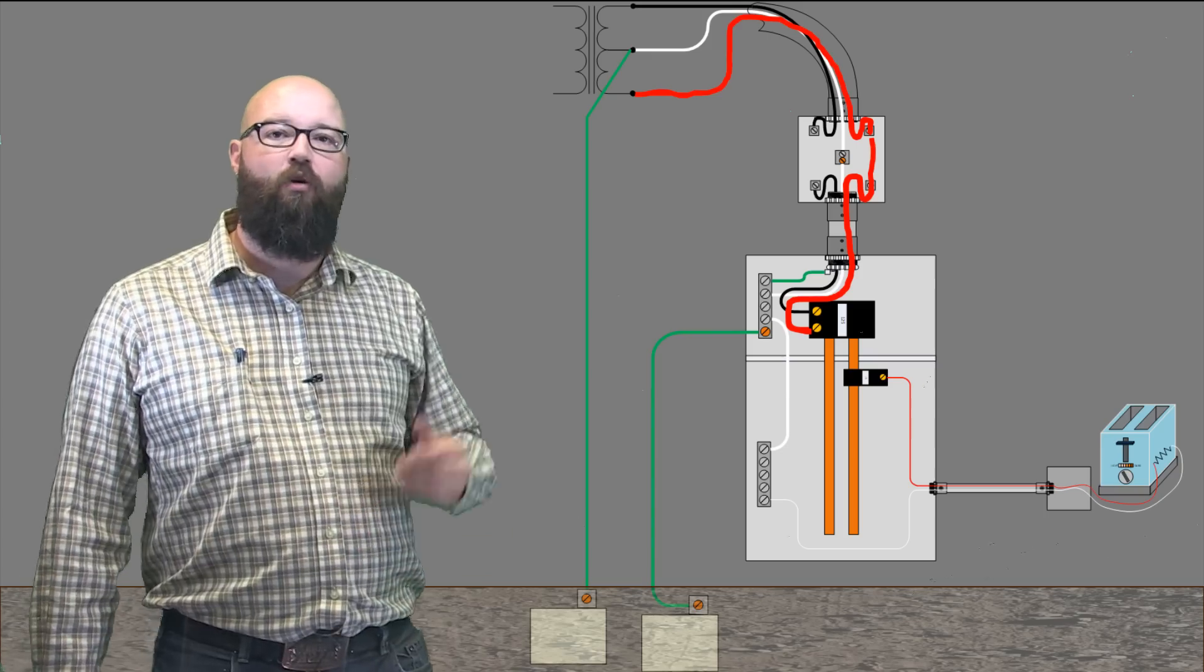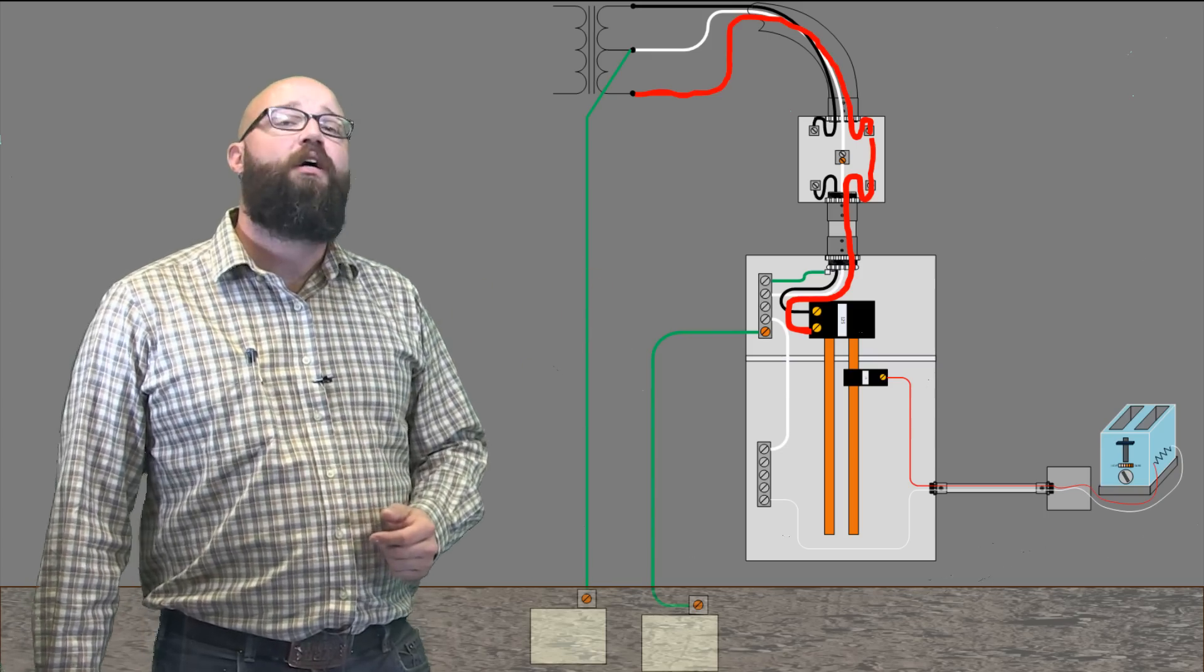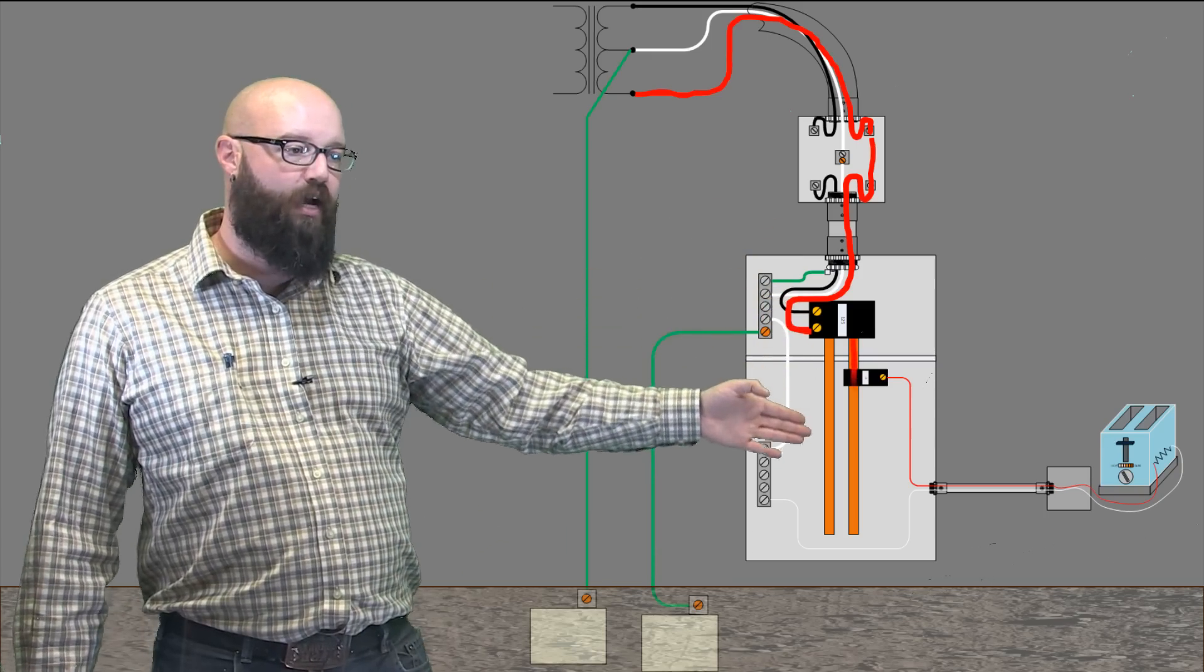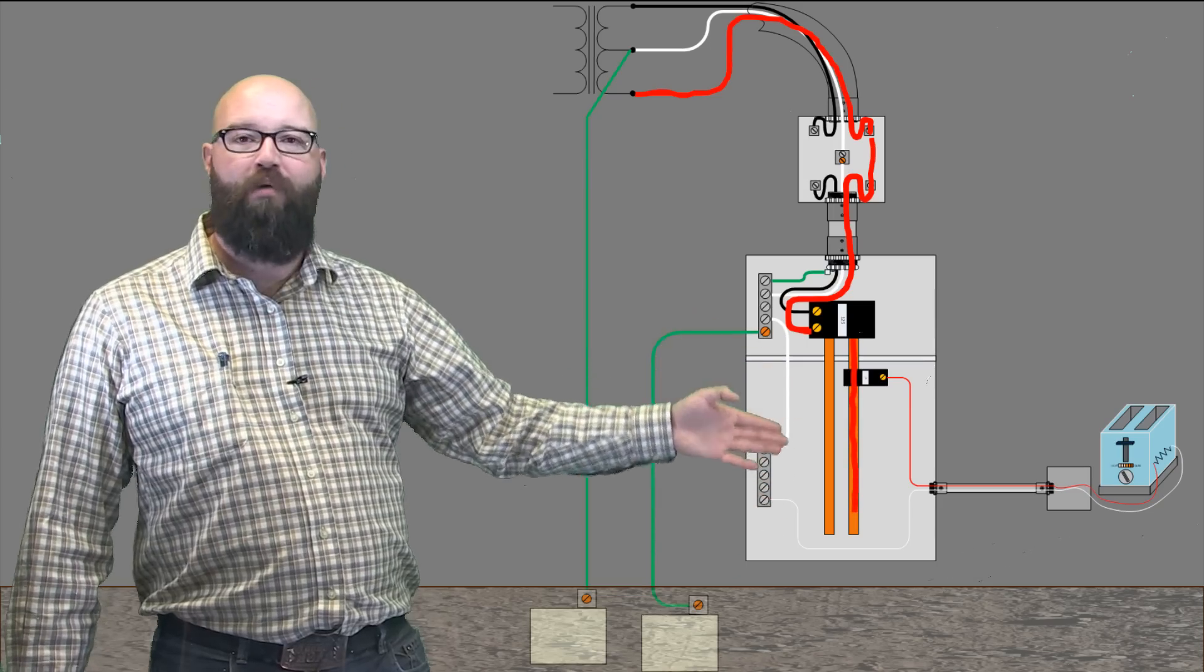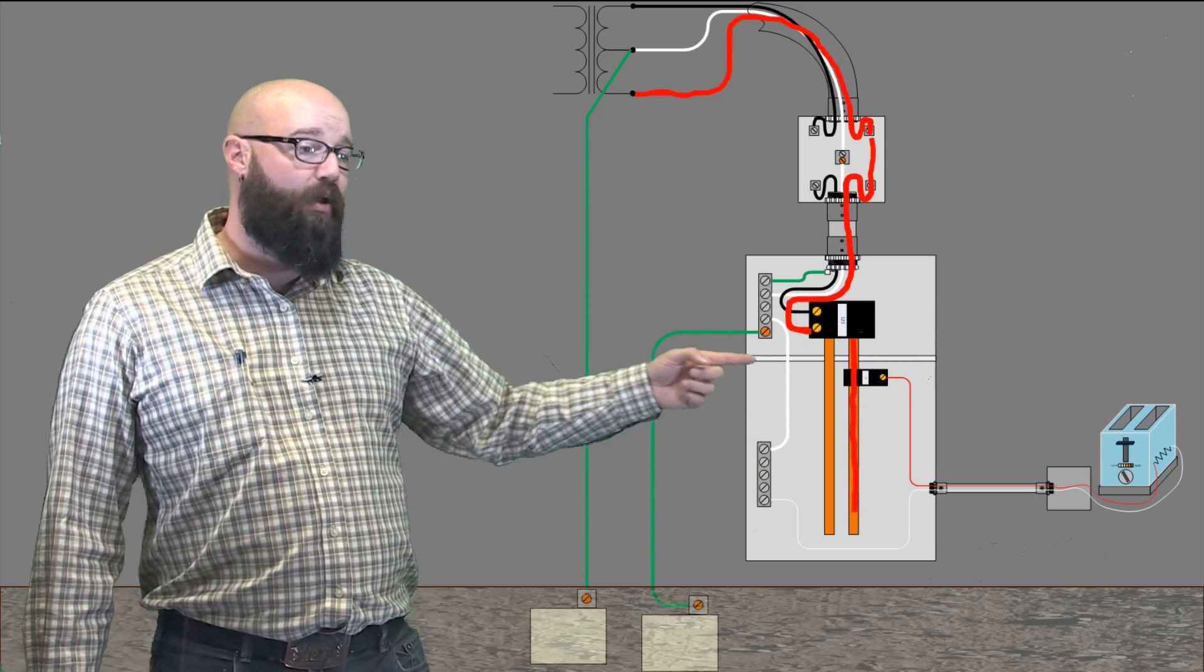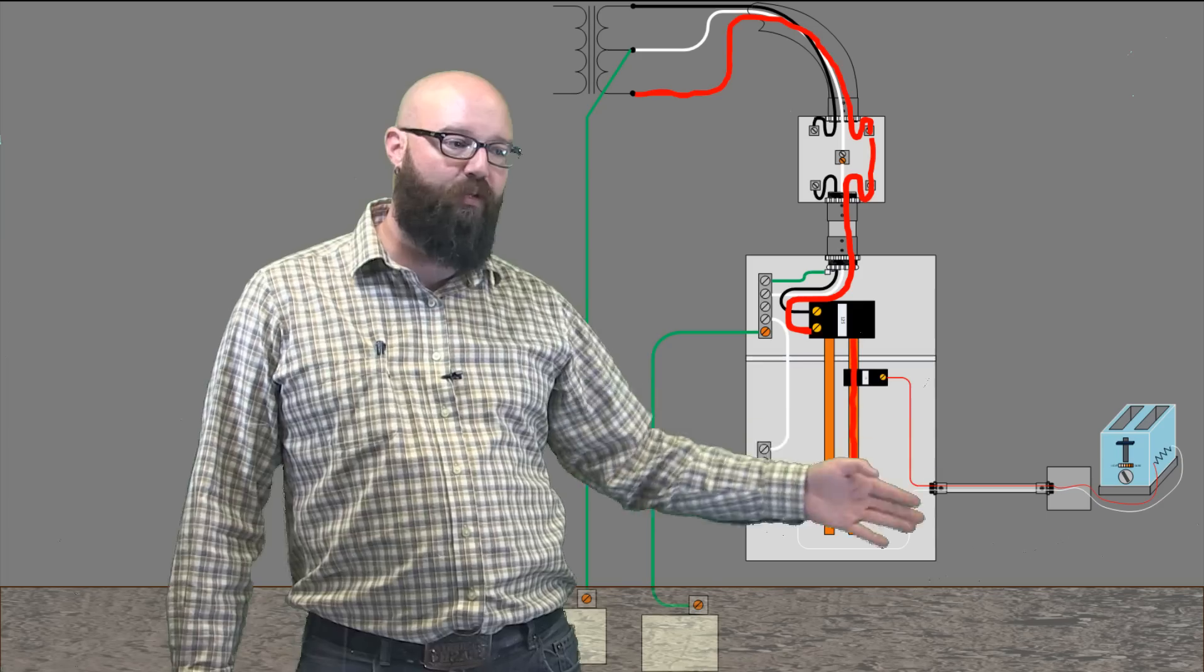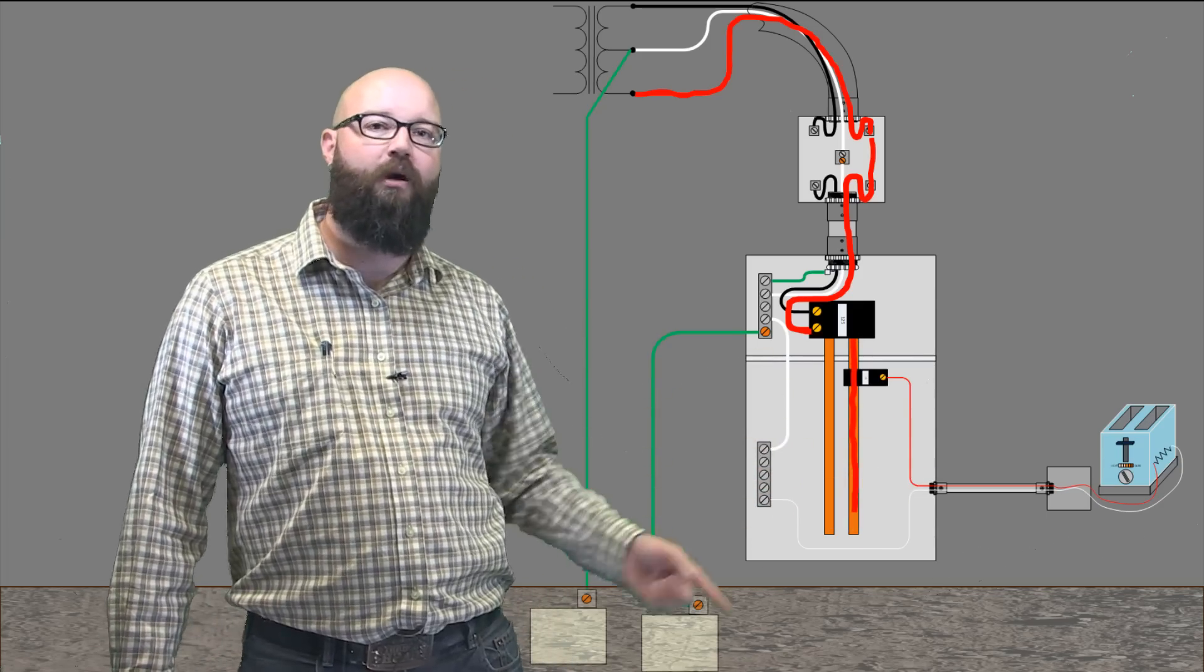When this breaker is energized, or when it's turned to the on position, what it's going to do is energize our feeder, or our bus bar in this case. We have our 15 amp breaker. Anything that's really attached to this feeder right now would become energized, but we have our 15 amp breaker attached.